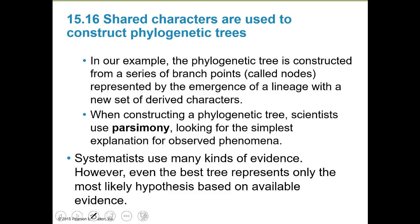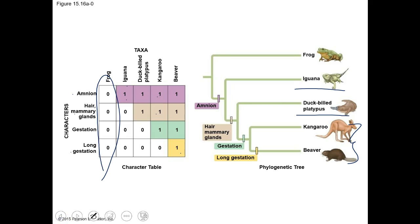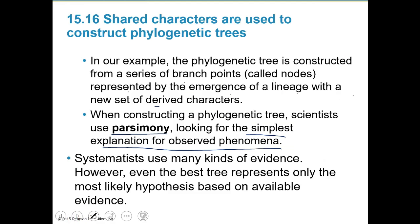In our example, the phylogenetic tree is constructed from a series of branch points called nodes, represented by the emergence of a lineage with a new set of derived characters. When constructing the phylogenetic tree, we use parsimony - looking for the simplest explanation of the phenomenon. Rather than creating a complicated scenario, we use parsimony to say the simplest explanation - moving step by step from one organism to the next - is probably the most accurate. Even the best tree represents only the most likely hypothesis available based on available evidence.